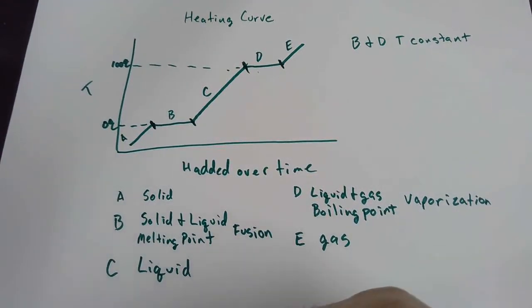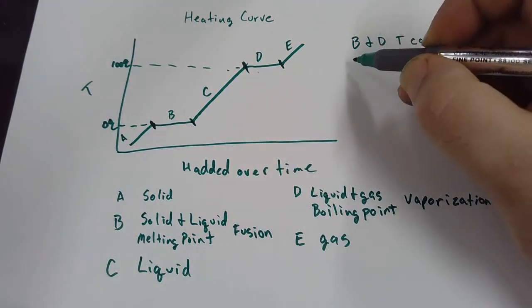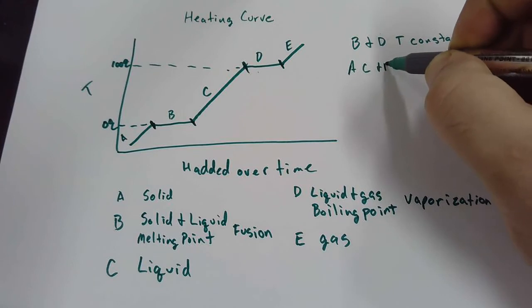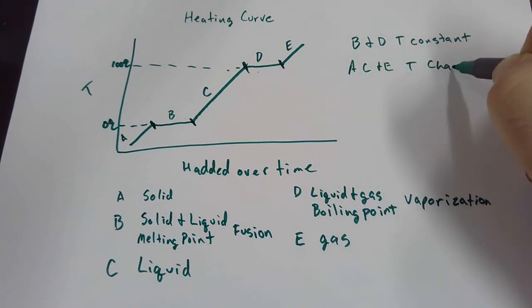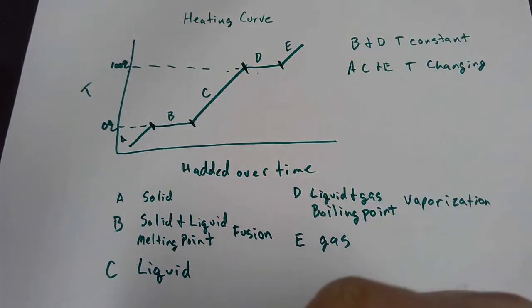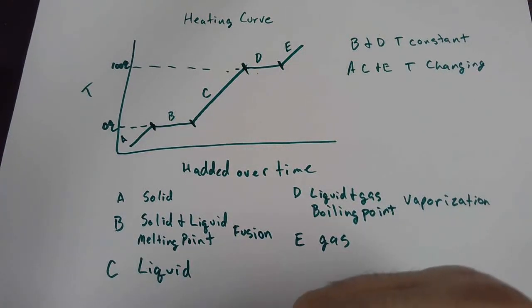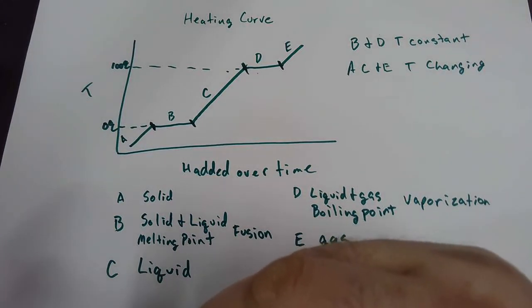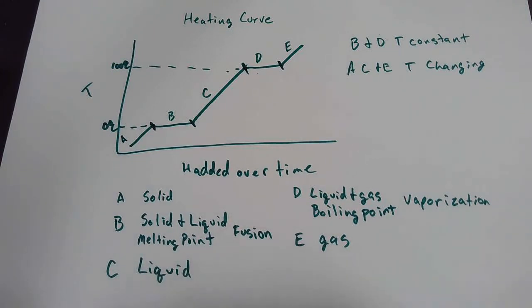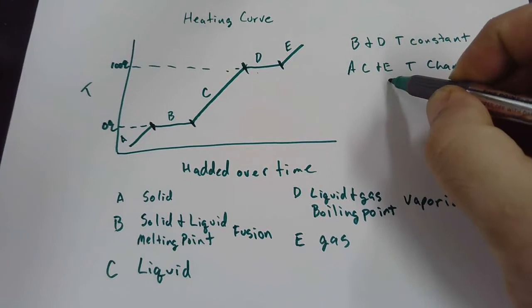What's happening during segments A, C, and E then? So temperature is changing. What is temperature, you guys remember the definition for temperature? Temperature has a very defined definition. The average kinetic energy of a system. So when temperature is changing, then I should be changing the kinetic energy, right? Which segments on here am I changing the kinetic energy? So this would be kinetic.